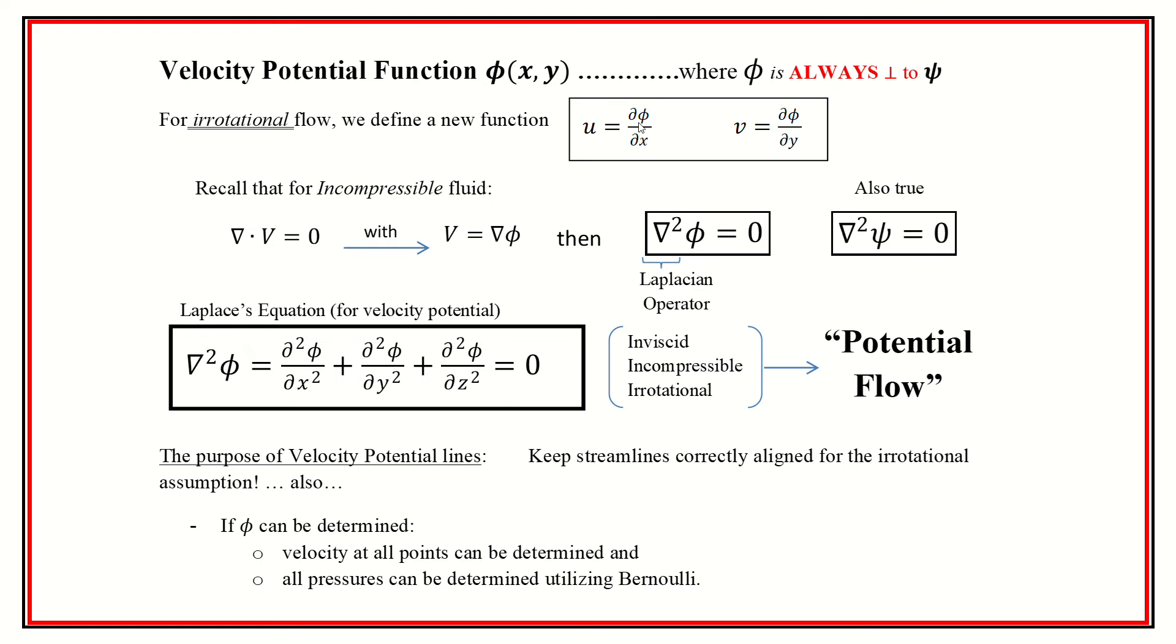So one of the aspects of these things is if you take the, as they're related, we get this Laplacian operator that can happen to both of these. And the necessary condition for this to happen is that we have irrotationality, right? So it has to be irrotational. And so several other aspects, we have to have inviscid, incompressible, and irrotational. And we have all three of those things. We're allowed to use these functions together to what is often referred to as potential flow. And the purpose of this potential flow lines is to keep the streamlines correctly aligned, right? And make sure that we have the irrotational assumption.